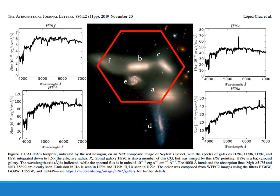Here again are the galaxies in the Seyfert's Sextet. This is the reconstruction: the blue curve is the inner part, the green is the intermediate, and the red is the outer part. Rectangles at redshifts 2 and 3 are selected because they enclose a star formation episode common to all four analyzable galaxies. We infer that the first crossing happened at redshift 0.3, the second turnaround happened at redshift 0.17, and the second crossing is happening now — beginning at redshift 0.016 — which is very close to the redshift of the group.